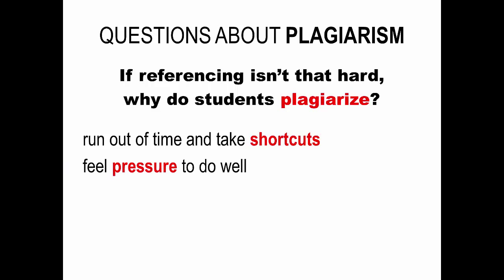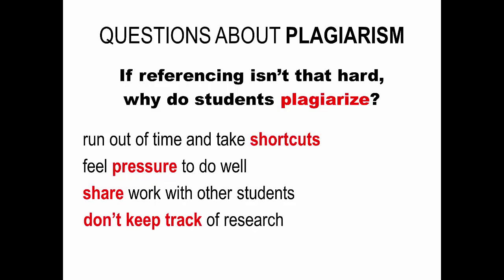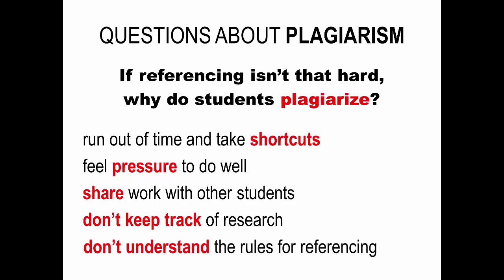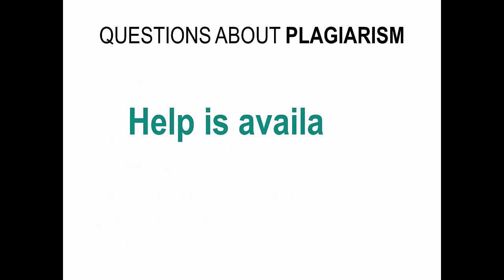Another reason plagiarism may occur is that students may be feeling pressure to do well on the assignment. Perhaps the student isn't doing as well in the course as they would like, and so they may try to take a shortcut to get the work done. When students share too much information with each other, both students can get into trouble. Also, plagiarism may occur when students don't keep track of their research. And finally, plagiarism occurs when students don't really understand the rules for referencing. Just remember, help is available.